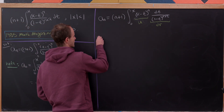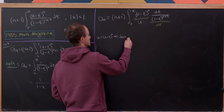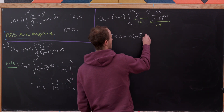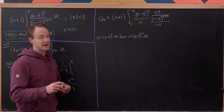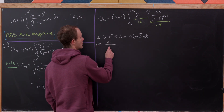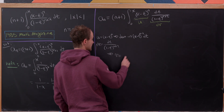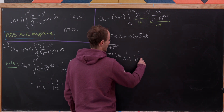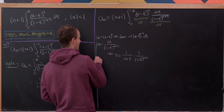Computing: du equals minus n times x minus t to the n minus 1, and v equals 1 over n plus 1 times 1 over 1 minus t to the n plus 1, where the two minus signs in the antiderivative calculation cancel each other out.